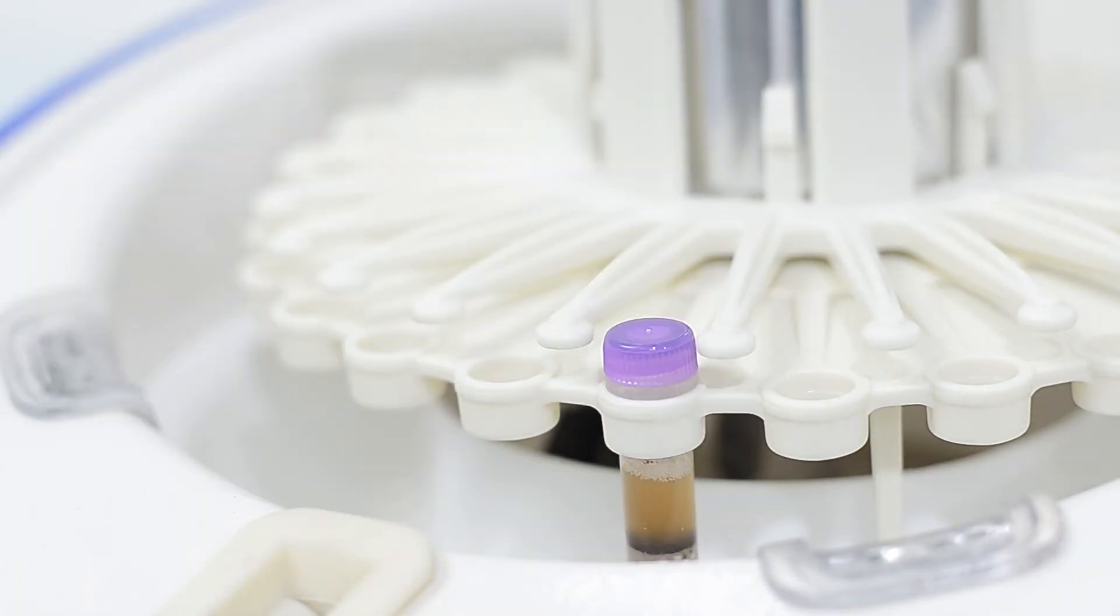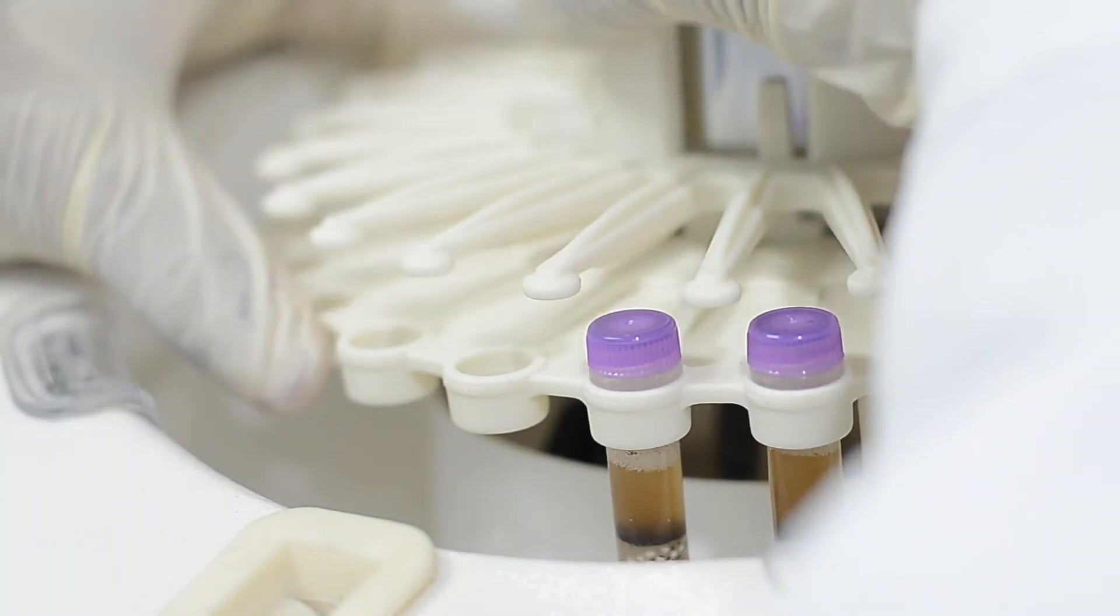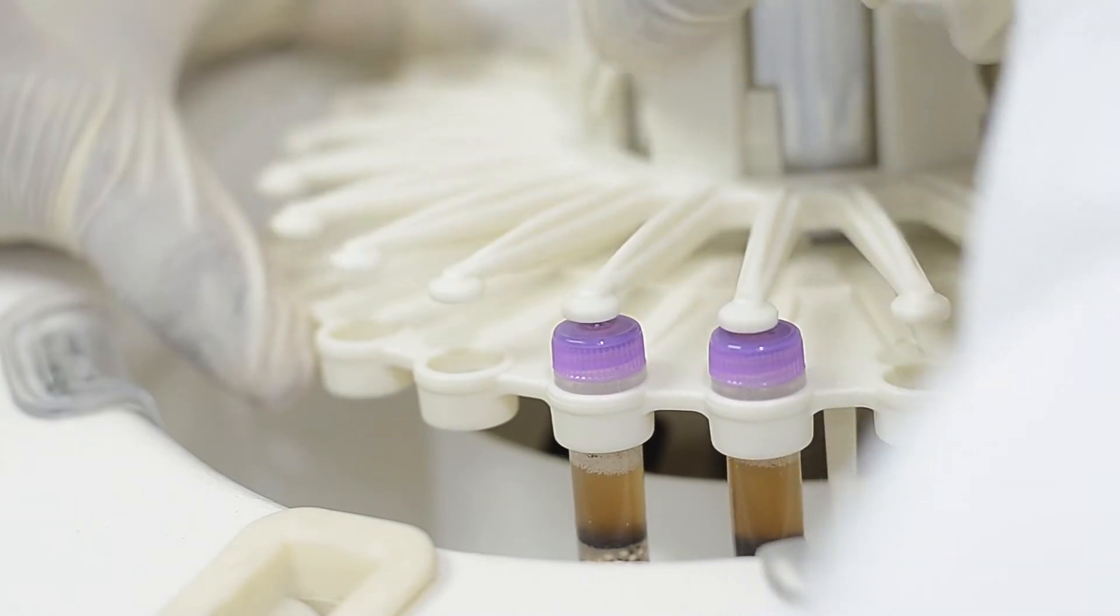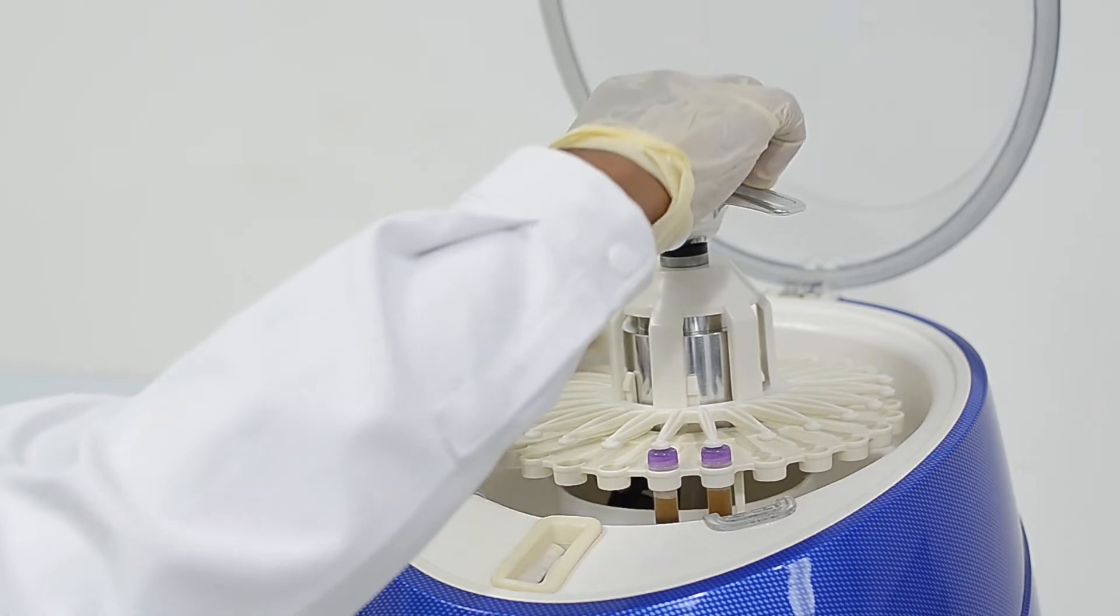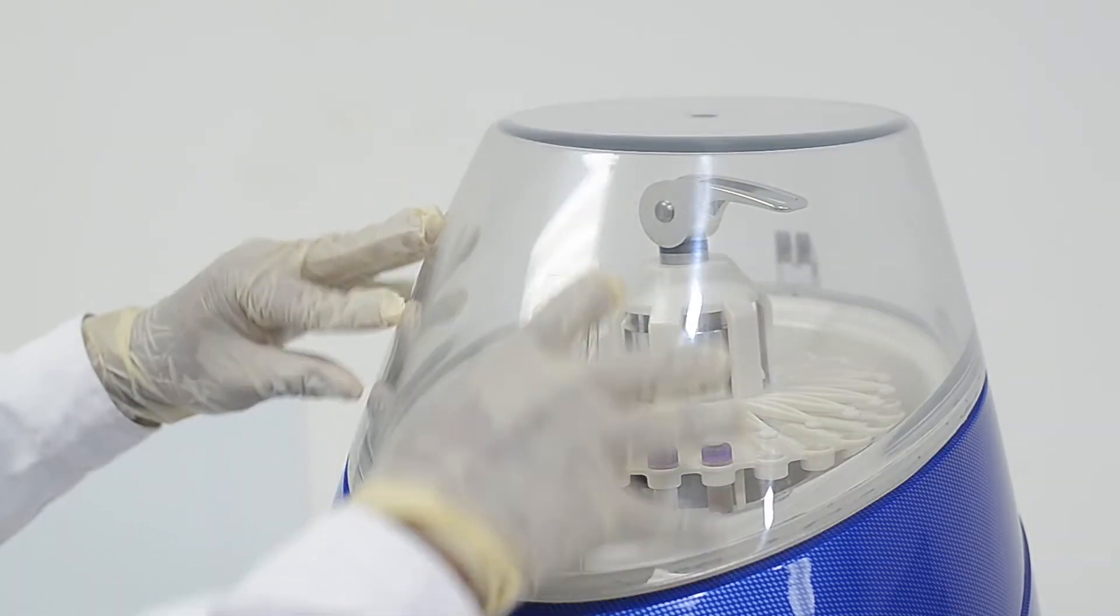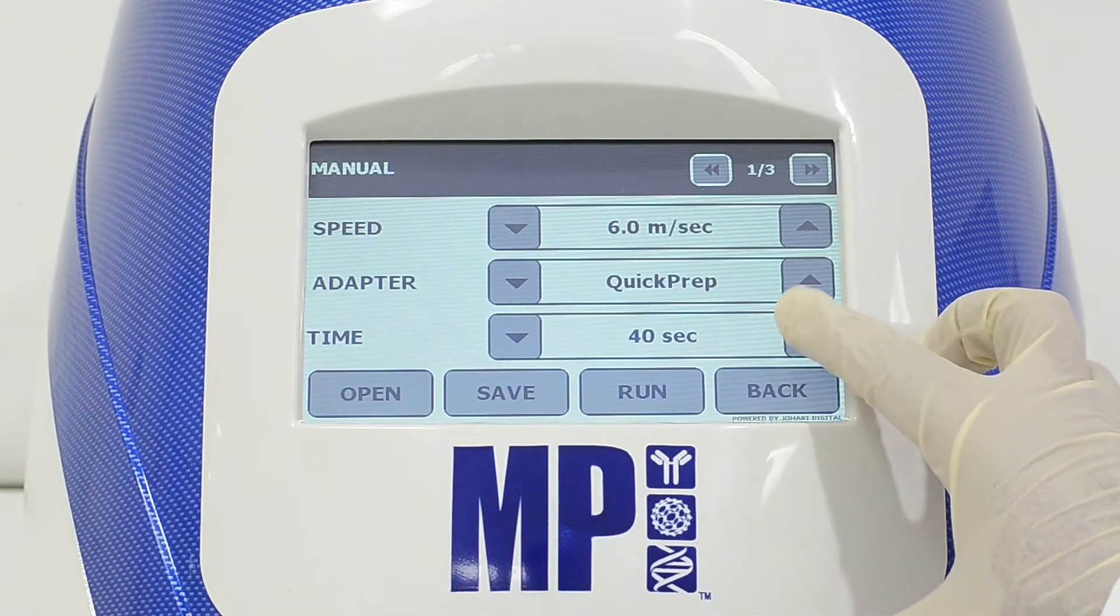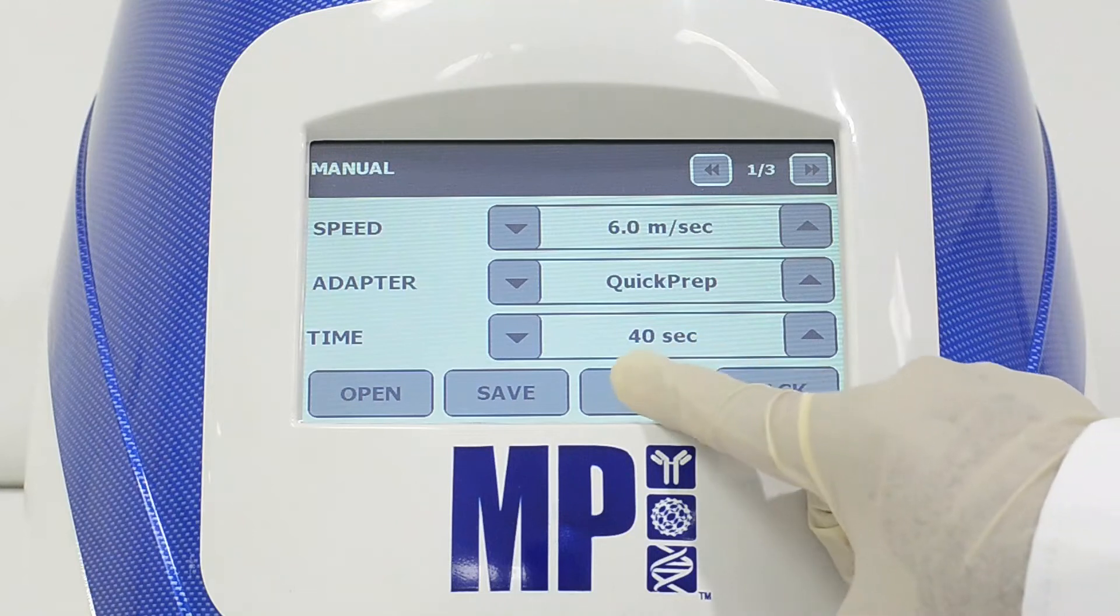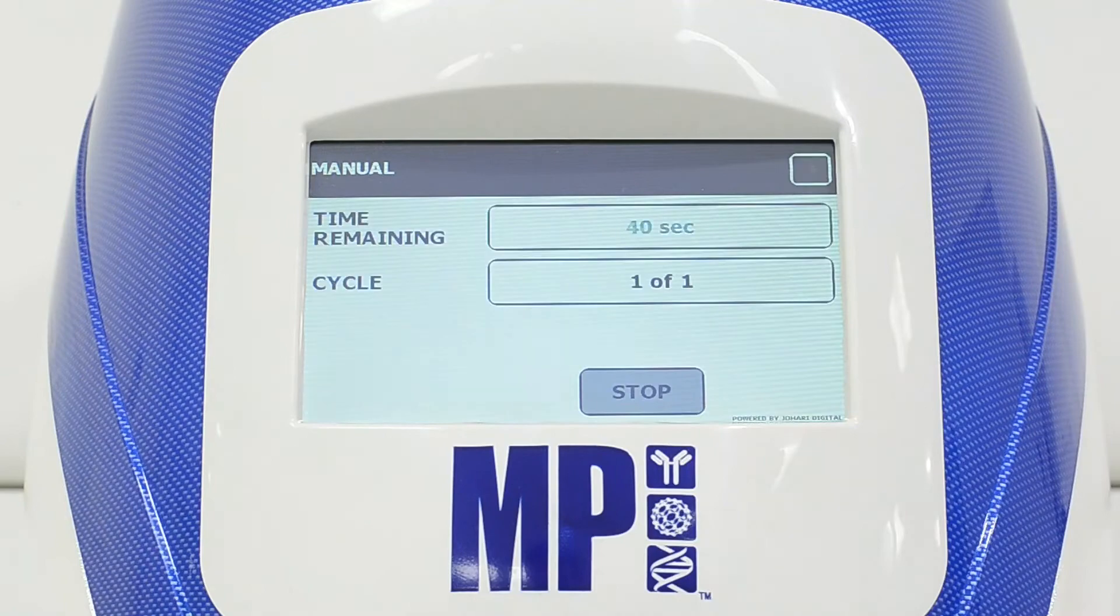Fasten the mixture to FastPrep instrument. Homogenize sample for 20 to 40 seconds at speed setting of 6 meters per second. The speed and time can be changed accordingly to different soil samples.